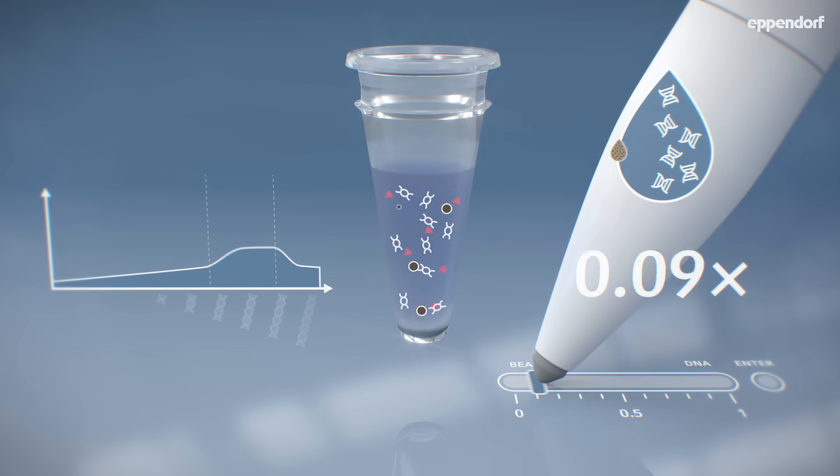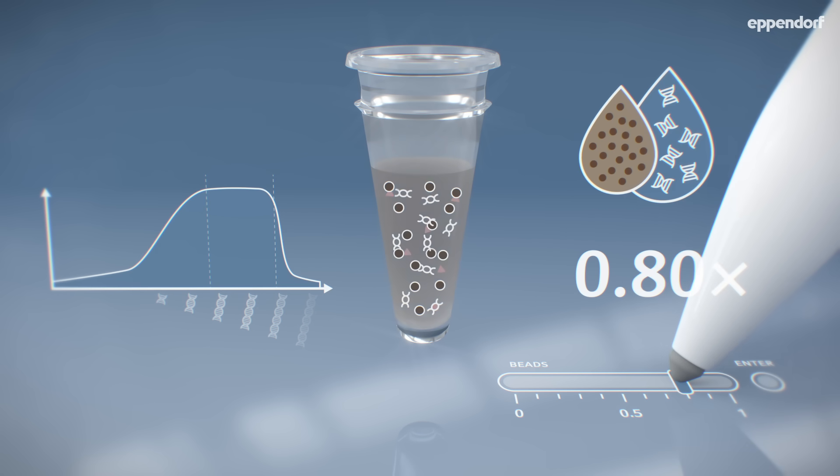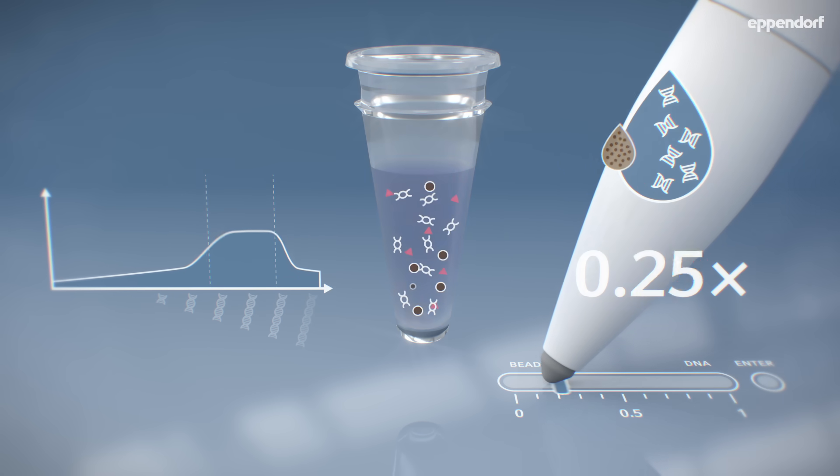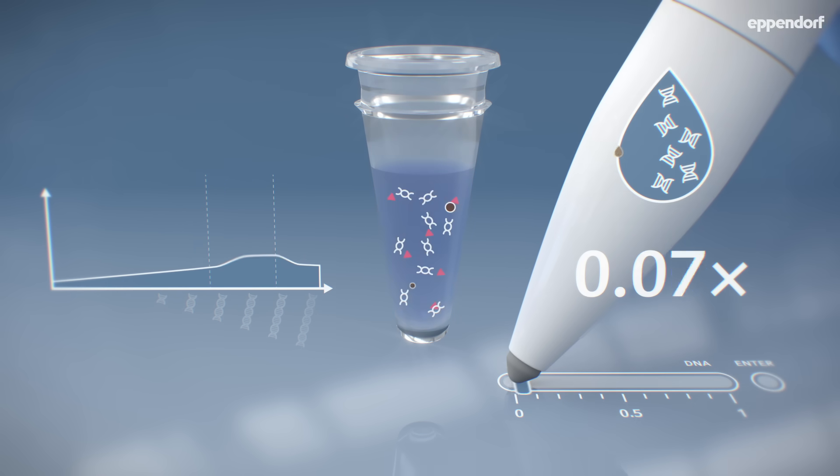The first step is the binding of the beads to the sample. The volumetric ratio of beads to DNA sample will influence the length of the DNA fragment recovered. Let's play around with that ratio.